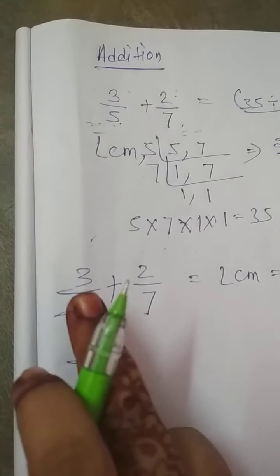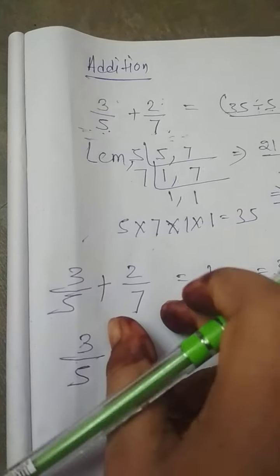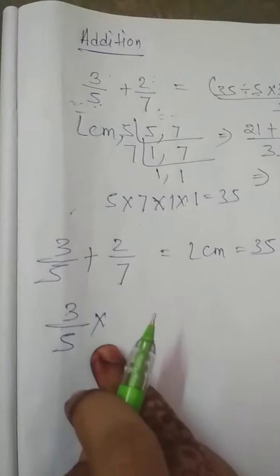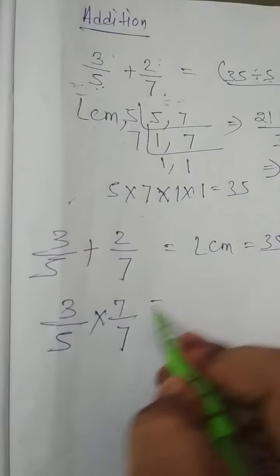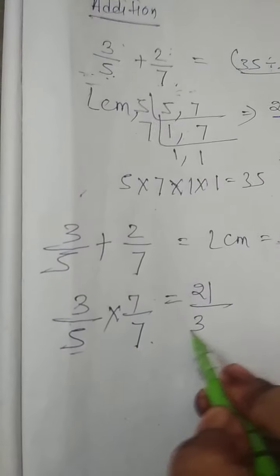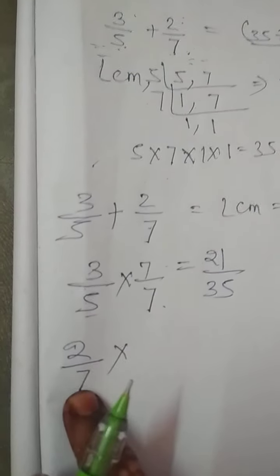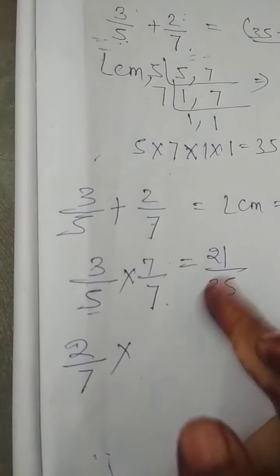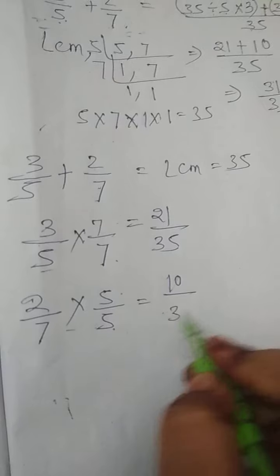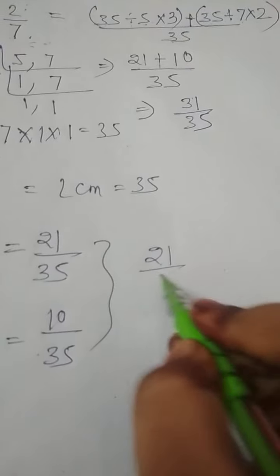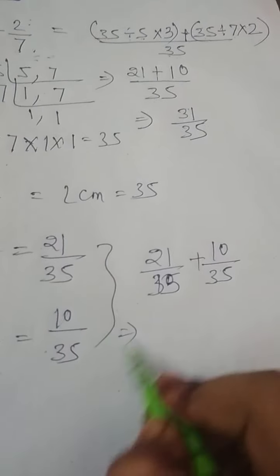We have to make the denominators equal. In 3 by 5, which number will I multiply to get 35? That is 7 — we have to multiply on both sides, upper and lower. So 7 into 3 is 21, and 7 into 5 is 35. Next, for 2 by 7, I will multiply by 5 to get 35 — so 5 into 2 is 10, and 5 into 7 is 35. Now add the two values: 21 by 35 plus 10 by 35, that is 31 by 35.